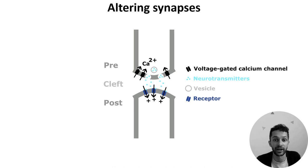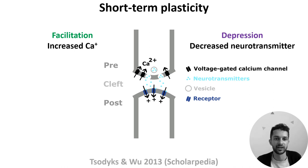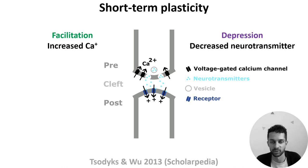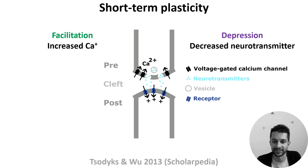But these are all long-term changes, and synaptic weights can also change on much quicker timescales — on the order of hundreds to thousands of milliseconds. This is known as short-term plasticity, and it describes how synaptic strength changes dynamically with the level of presynaptic activity. Broadly, short-term facilitation is caused by higher levels of calcium at the axon terminal after spiking, which increase the probability of neurotransmitter release. Short-term depression is caused by lower levels of neurotransmitters available at the synapse, and in extreme cases the synapse may fail to send signals at all.